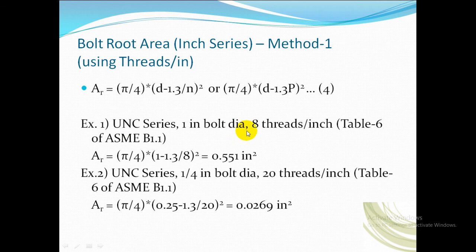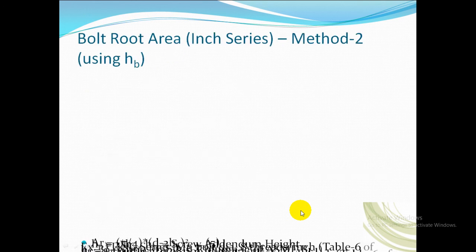Let us see one example just to cross-check with the ASME B1.1 standard. Let us take the UNC series 1 inch bolt diameter where threads per inch is 8. After substituting these values in the bolt root area, you will get the value of 0.551 inch square. One more example we will take just for cross-check, since one example may match and the other may not match, just for further confirmation. In the second example, the UNC series 1 by 4 inch bolt diameter with 20 threads per inch have been used, and the bolt root area for that case is 0.0269 inch square.